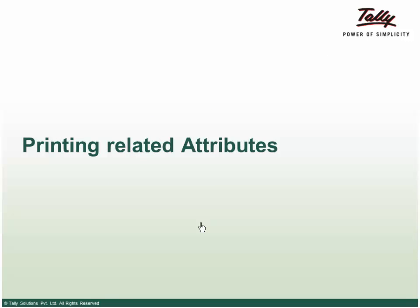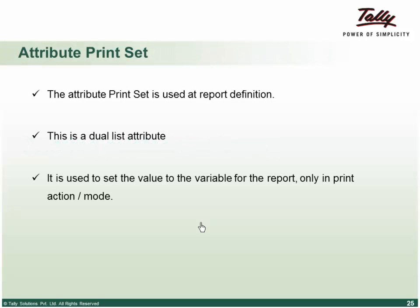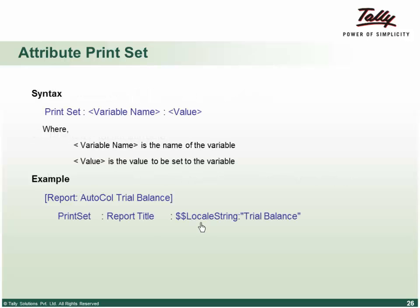There are certain attributes related specifically to printing that come into action only when a report is in print mode. The print set attribute at report definition is a dual list attribute used to set a variable value for a report in print mode. The syntax is: print set variable name and value. Generally, when we use a set attribute it changes the variable in display mode; when we want to change a variable value only in print mode, we use the print set attribute — meaning while printing, set the variable name to this value.